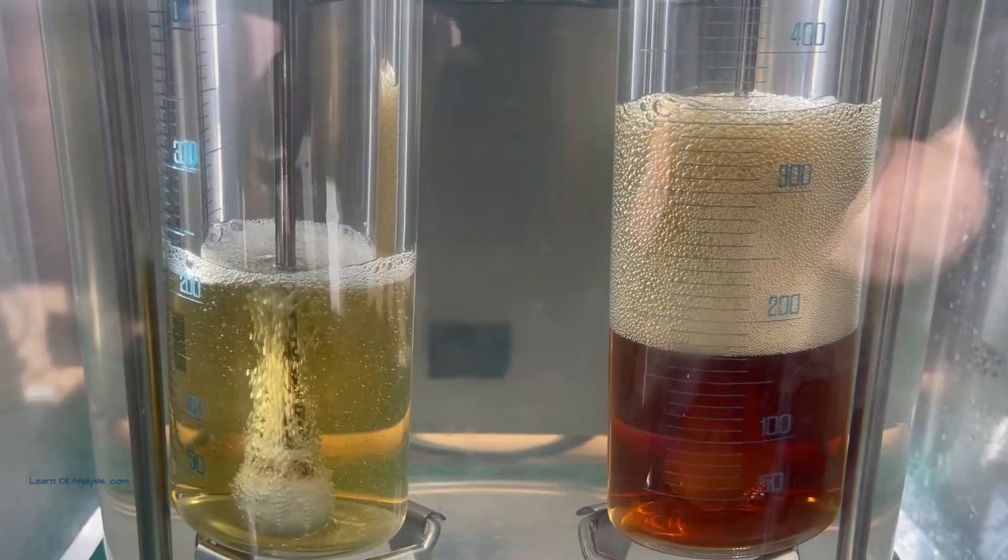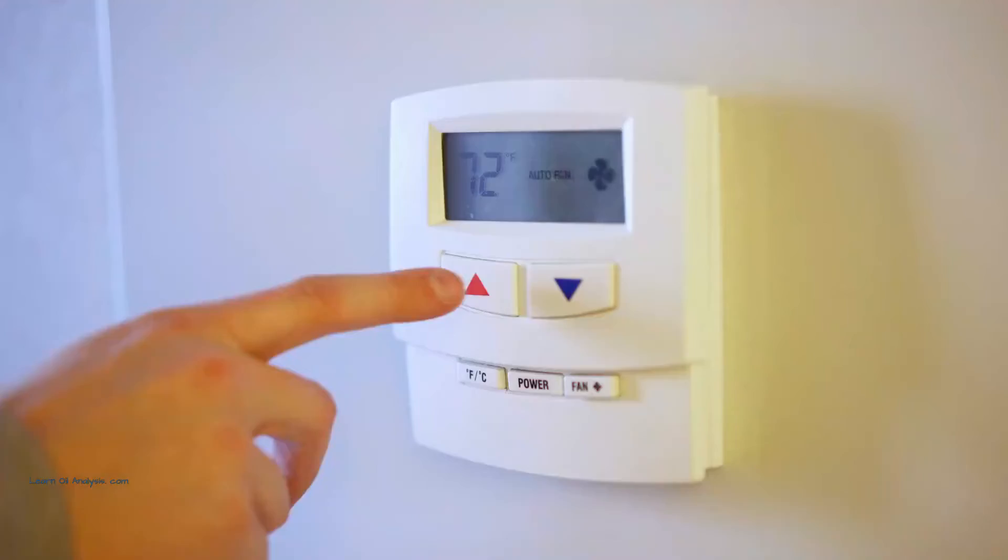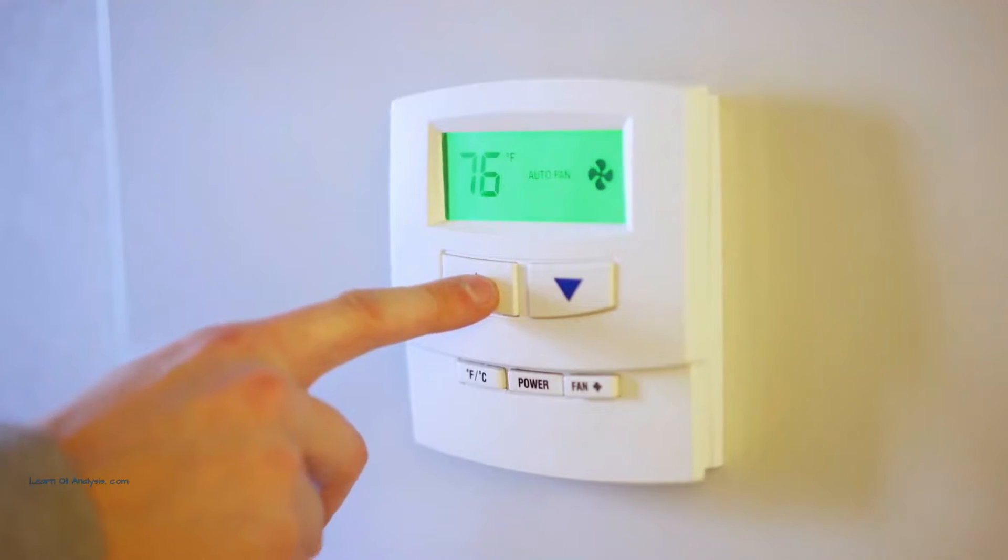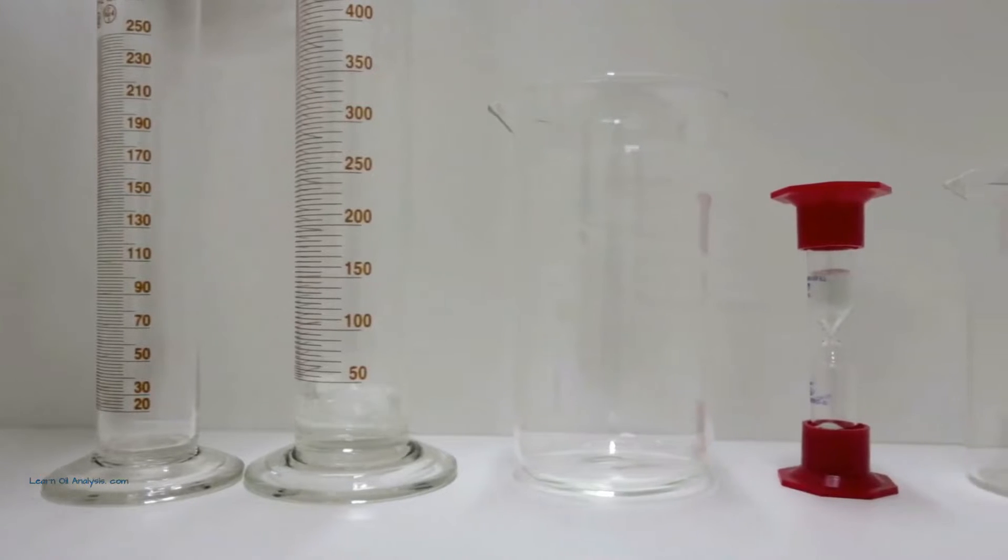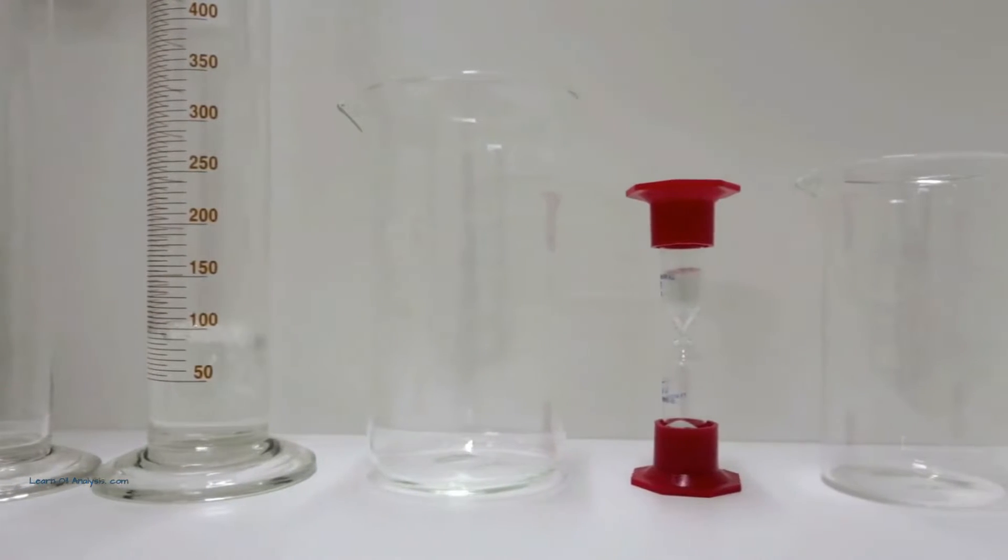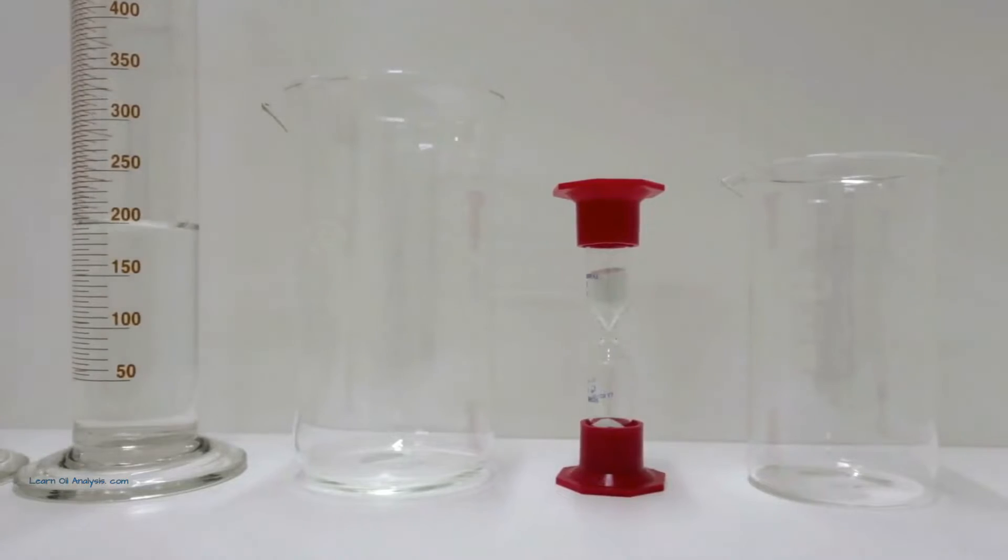The ASTM standards outline 4 main sequences for this test. Sequence 1 is room temperature testing, which serves as our baseline. Sequence 2 involves high temperature testing at around 93 Celsius or approximately 200 Fahrenheit, and this is where things really heat up.